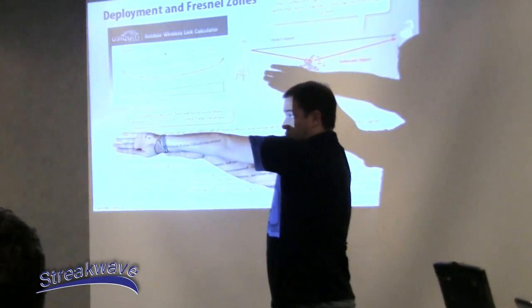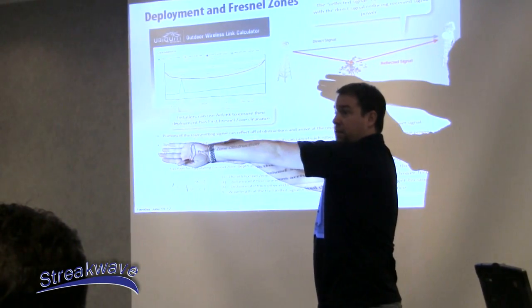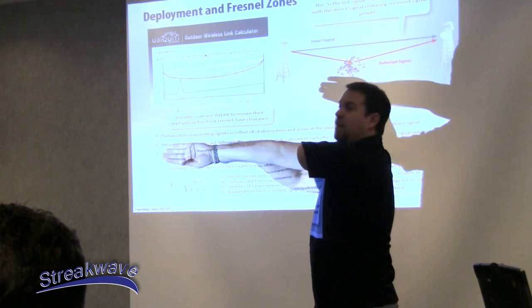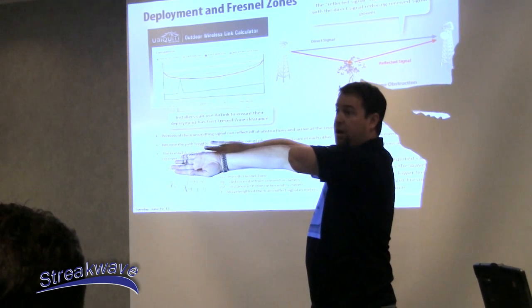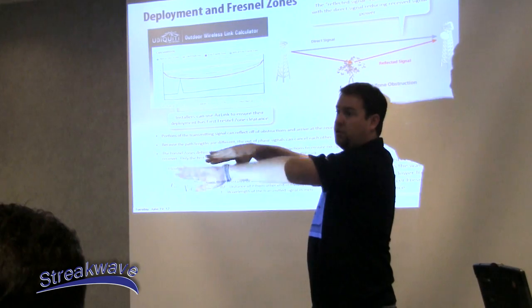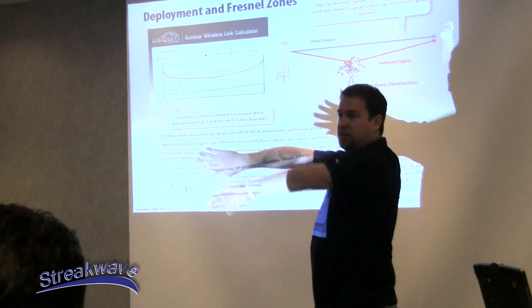So just because you see it, like let's say there's a building over on the left, halfway between the link, but you can still see the other side, that can be Fresnel zone, that can create an issue as well. So it's not just below, it can be on either side of it as well.